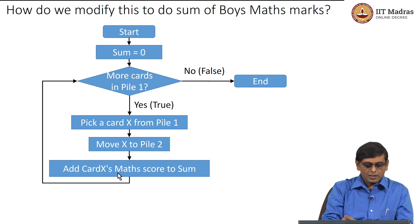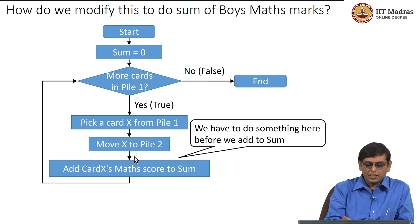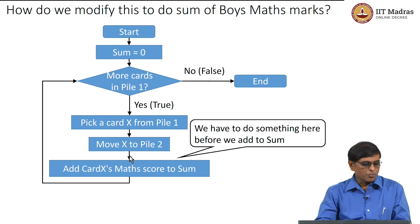But it is only here, where we are adding the math score to sum, that we need to make some change. We have to not do it for all the cards. So between here and here, if that card X belongs to a girl then we should not do the addition. But if it belongs to a boy then we have to do the addition. Something in here we have to insert so that we can check whether it is a boy or a girl.